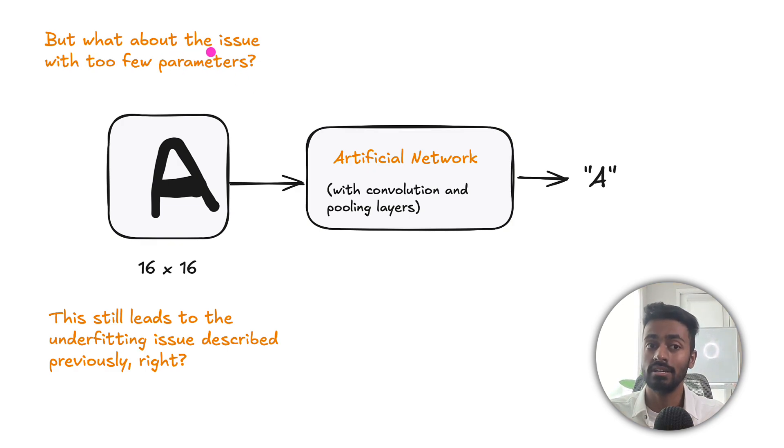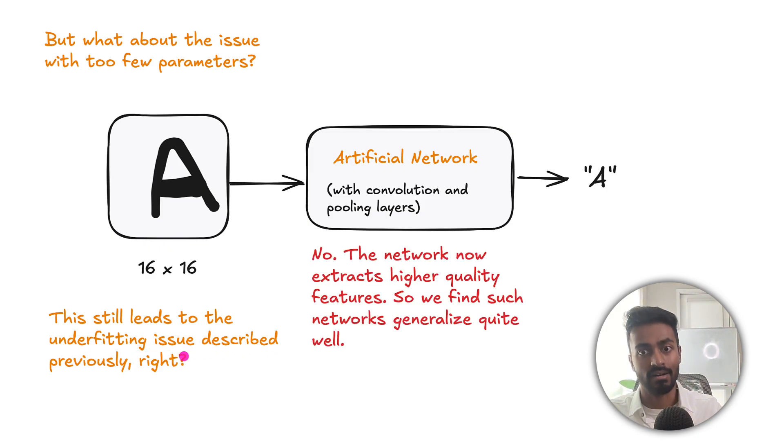But then what about the issue with too few parameters? Wouldn't this lead to an underfitting issue that we described previously? Well, not really, because the network now extracts much higher quality features, as it takes advantage of the fact that the input is an image. So the convolution is going to extract spatial relationships with respect to pixels, which is very image specific, and it works quite well because it's an image. And the pooling layer is going to work in order to make sure that small changes, and also translations, don't affect this output. And so we find that such networks generalize quite well.